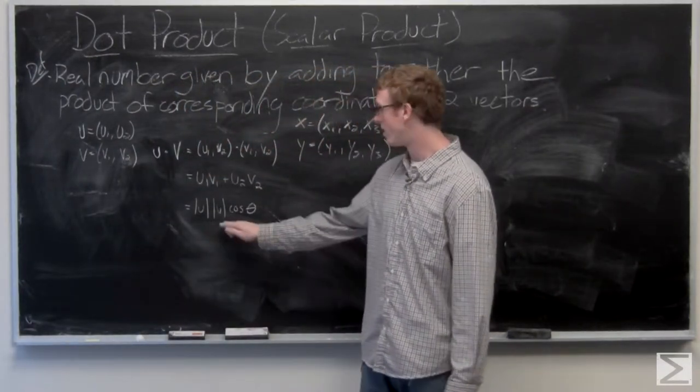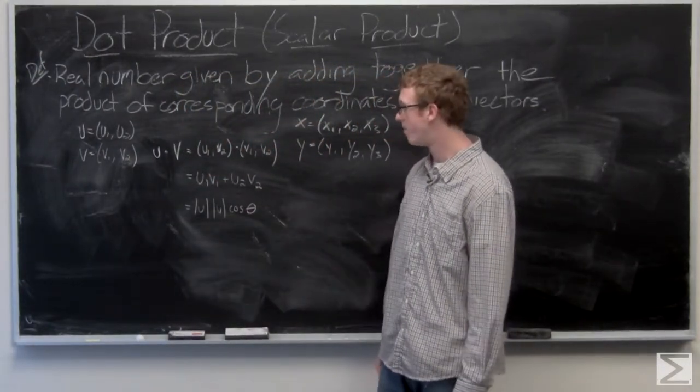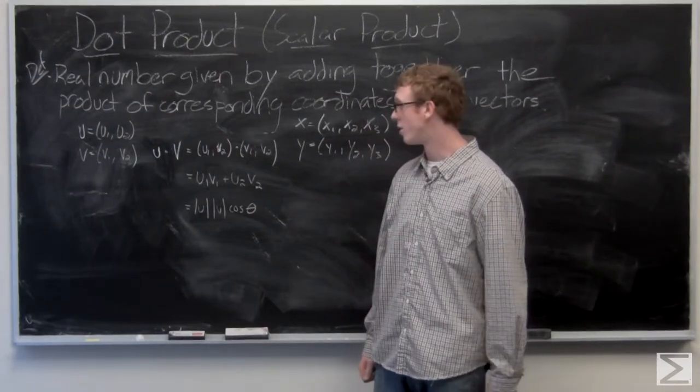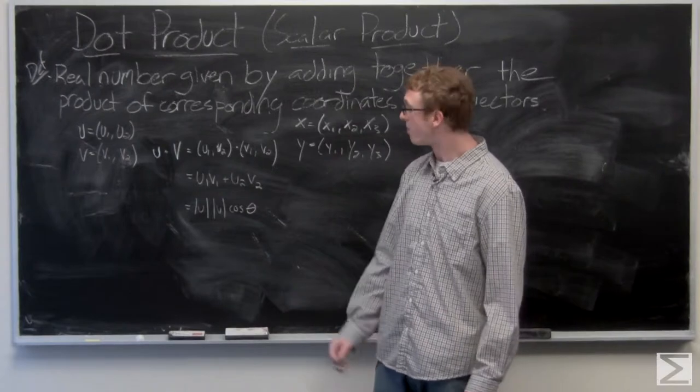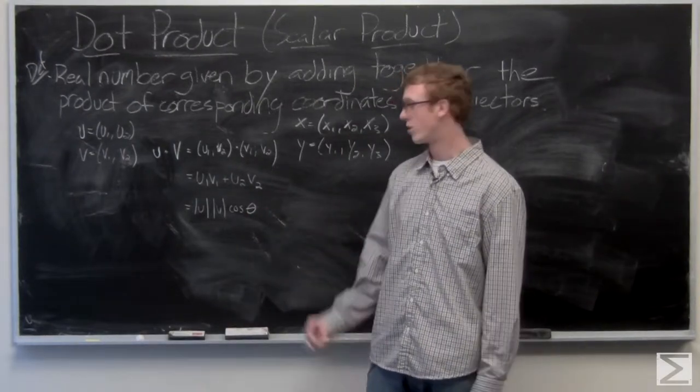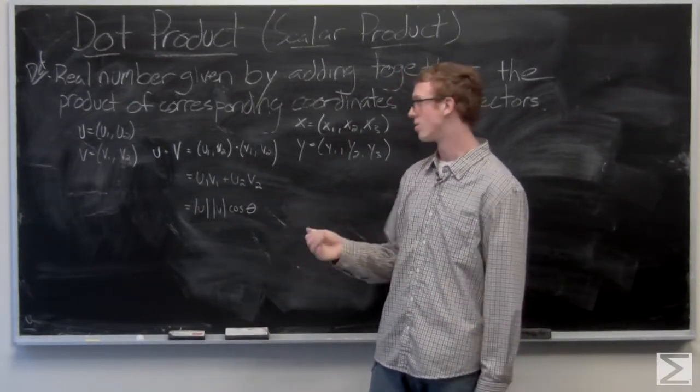I've used the bars here to denote the magnitude of u and the magnitude of v, which you can see in another video, and then times cosine theta, where theta is the angle between the two vectors.